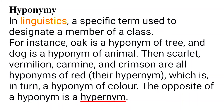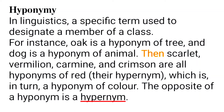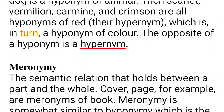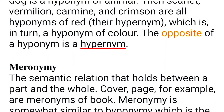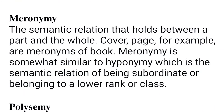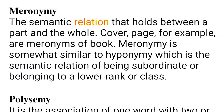Hyponymy: in linguistics, a hyponym is a specific term used to designate a member of a class. For instance, 'oak' is a hyponym of 'tree,' and 'dog' is a hyponym of 'animal.' Similarly, scarlet, vermilion, carmine, and crimson are all hyponyms of 'red,' which is itself a hyponym of 'color.' The opposite of a hyponym is a hypernym.